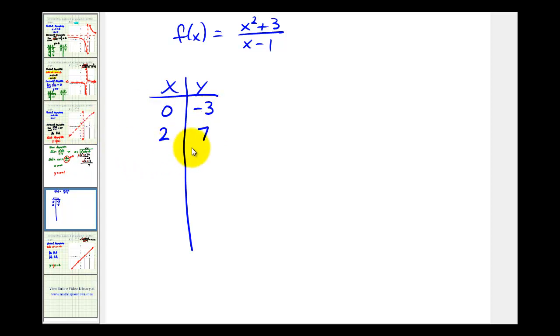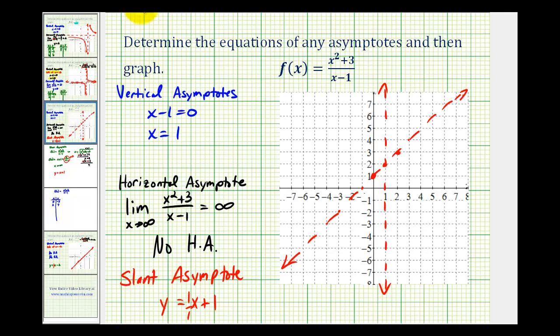We have zero, negative three, and two, seven. Zero, negative three is here, and two, seven is here.